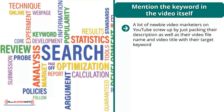Mention the keyword in the video itself. A lot of newbie video marketers on YouTube screw up by just packing their description, video file name, and video title with their target keyword — that is spam. Don't do that. You can mention your target keyword in your title once, and then maybe a related keyword in the subtitle. That's it. Don't stuff the description or title of your video with keywords.